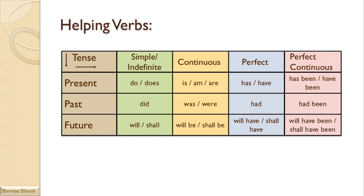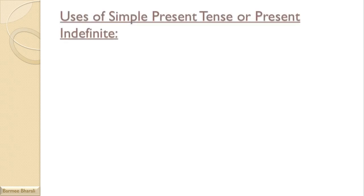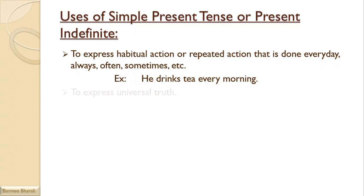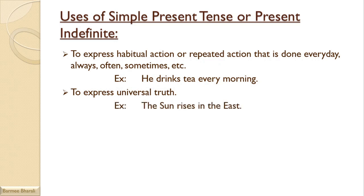Now let's learn about the uses of simple present tense, or present indefinite. It is used to express a habitual action or repeated action done every day — always, often, sometimes — for example, 'He drinks tea every morning.' It is also used to express universal truths like 'The sun rises in the east' or 'The earth moves round the sun,' and to express what a cow gives us milk.